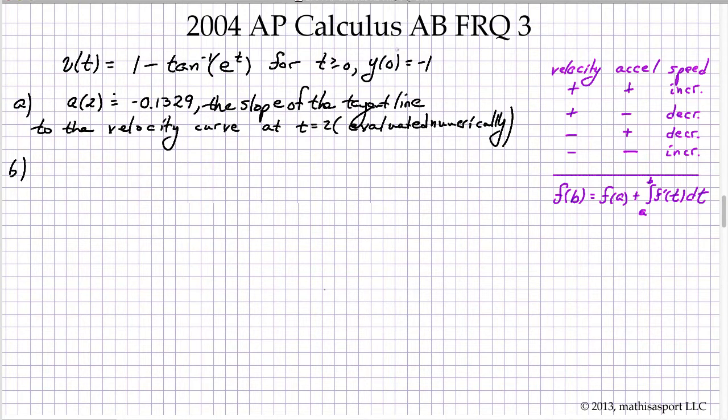Part B wants to know whether the speed of the particle is increasing or decreasing. And you'll recall from this table that that means that we need to know both the velocity of the particle and the acceleration of the particle at t equals 2.